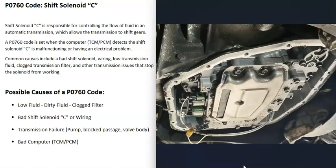The next thing that could cause this is some kind of internal transmission failure — like a bad pump, a blocked passage going to that shift solenoid, or a bad valve body. Basically anything that would stop that shift solenoid from working. Usually if that happens, you'll be getting a lot of other codes as well, so pay attention to that.